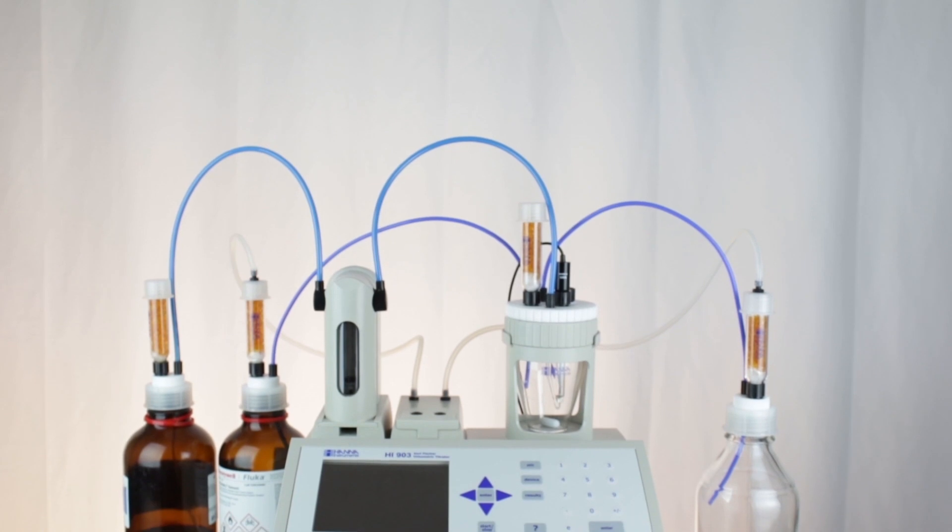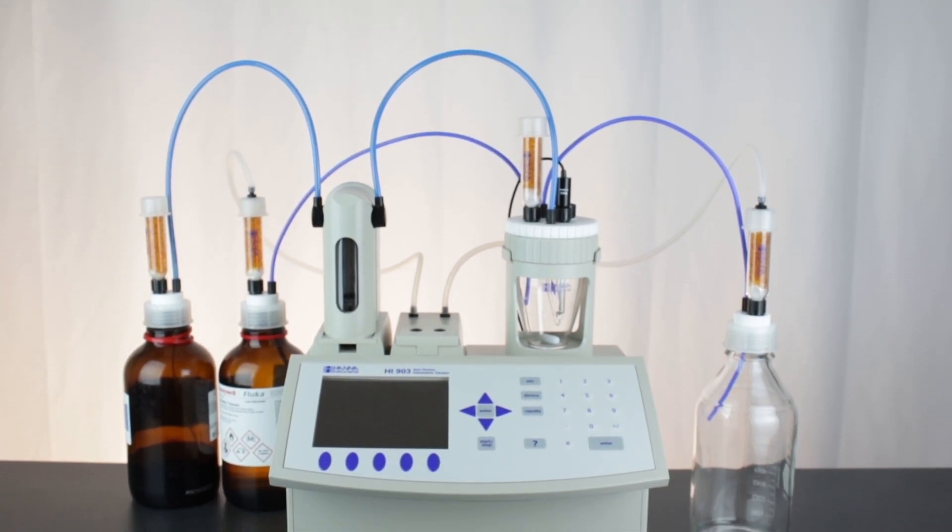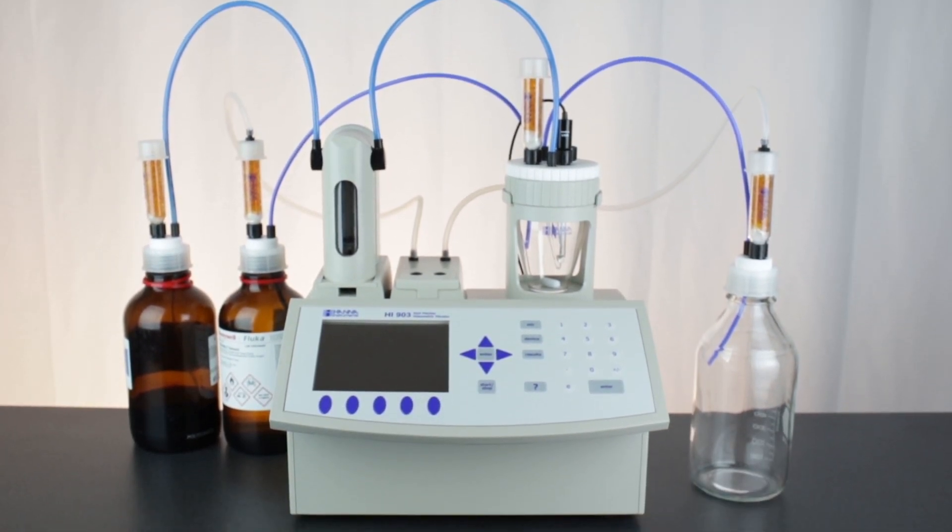You can begin to prepare for Karl Fischer titrations by filling the cell and priming your burette. Thank you for your purchase of the Hanna HI-903 Volumetric Karl Fischer Titrator. We hope you have found this video tutorial useful. If you have any questions or concerns, contact us at sales@hannainst.com or call us at 877-MY-HANNA. Thanks again and we'll see you soon.